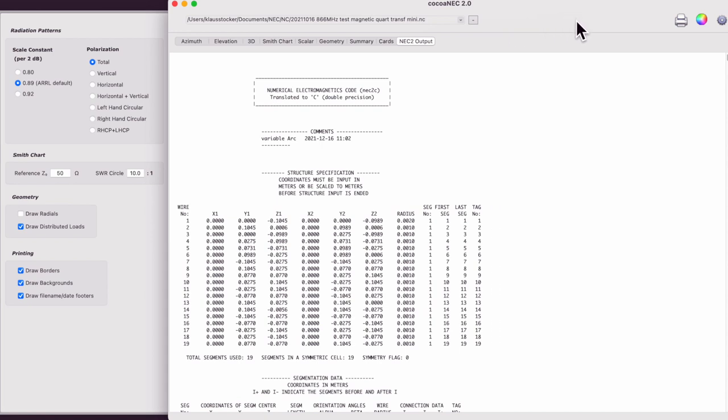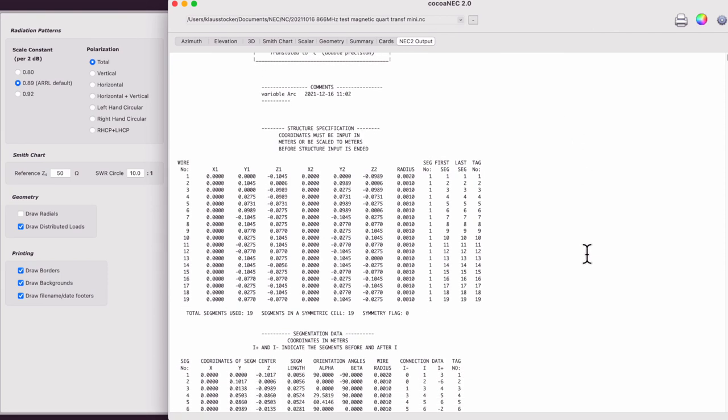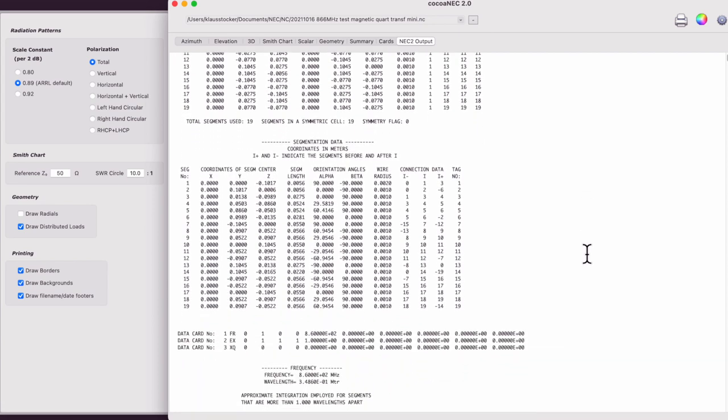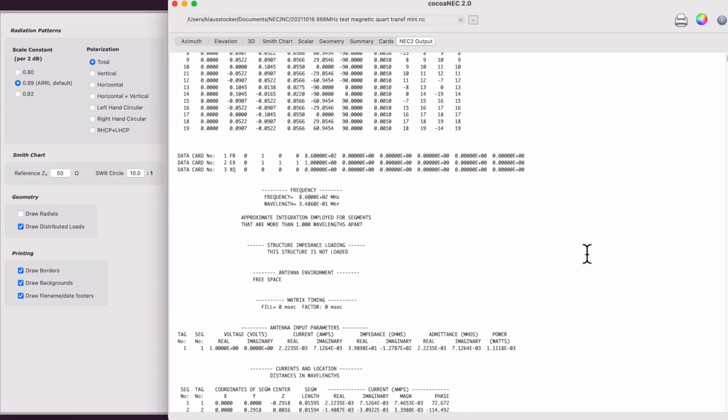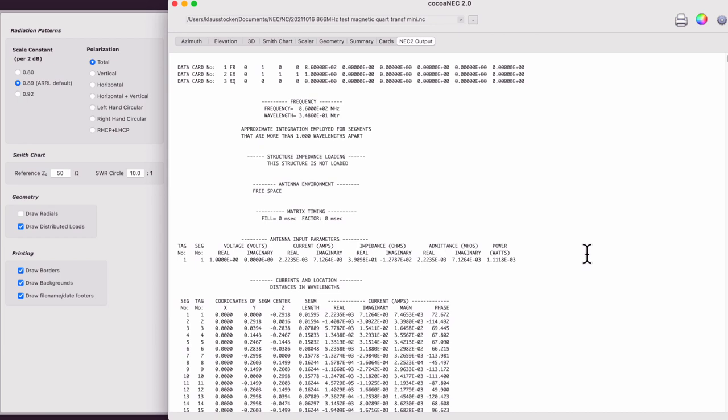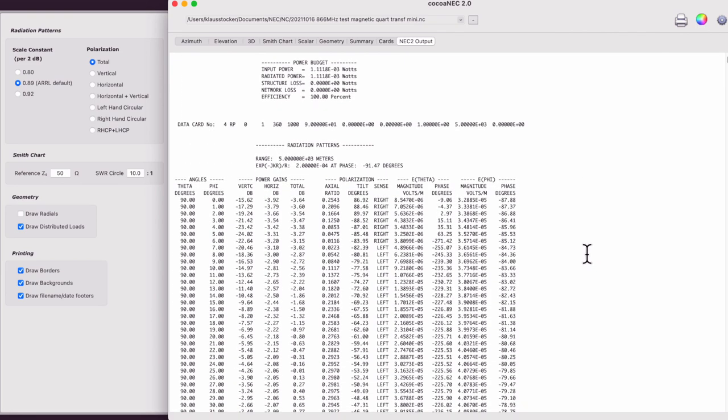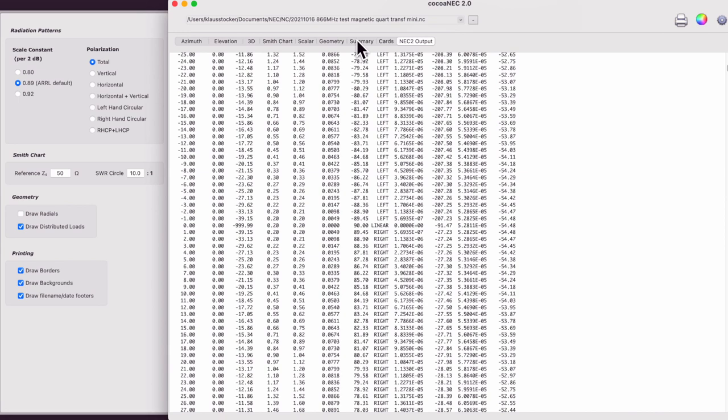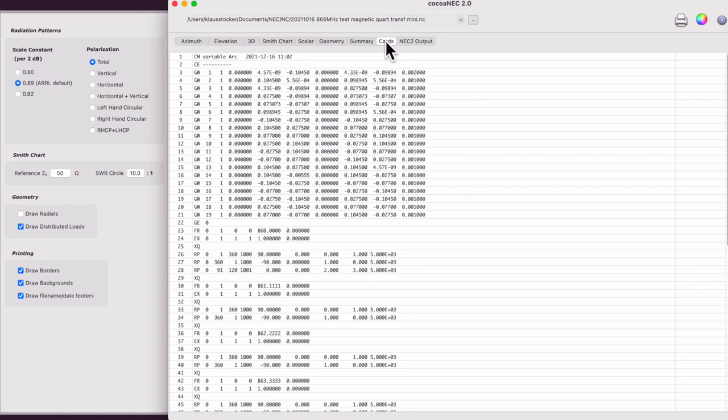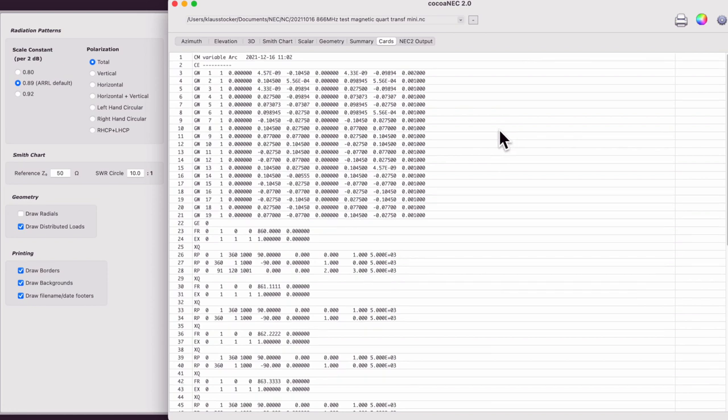Depending on your input, the output of the program can be a huge dataset, because it is giving you all the currents on all wires, the radiation patterns in three-dimensional space and a lot more if you want. I'm showing not even 10% of the complete output data here.